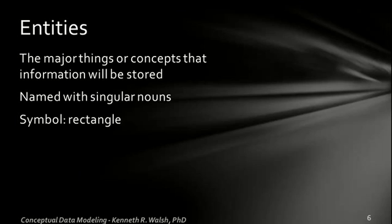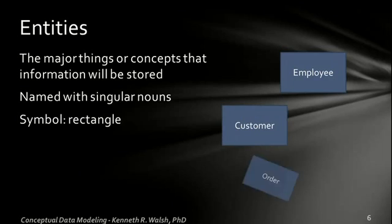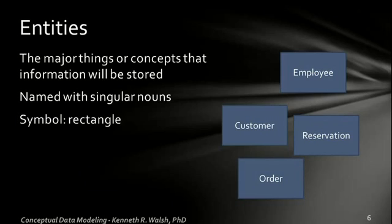Entities are the major things or concepts that information will be stored about. We name them with singular nouns and the symbol we use is the rectangle. Here's some examples. Employee. Customer. Order. Reservation. Tracking reservations would be important if we were in, say, the hotel business or the restaurant business. Course. Tracking the courses that we offer would be important in a university or training environment. So these are some of the entities you want to identify for your organization or for whatever situation you're working in.